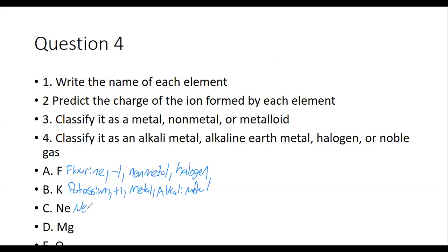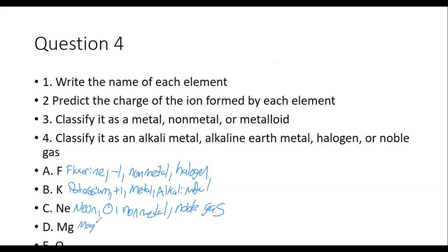Neon — NE is neon. Charge? It's a noble gas. Noble gases don't form charges, so charge is zero. Noble gases are nonmetals. And it's classified simply as a noble gas. That's neon. Next, magnesium — element 12. It's an alkaline earth metal, so basically all alkaline earth metals are plus 2. It's a metal because it's on the left-hand side, and its category is alkaline earth metal.